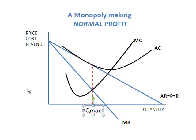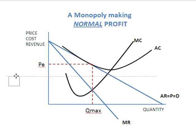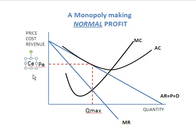Now, what about the price? Let's take this price line and put it in here. You'll notice that point represents both price and cost — they both happen to coincide at the same point. So cost and price are the same in this situation.